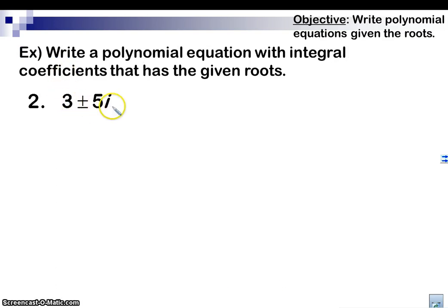So this here, I got 3 plus 5i, 3 minus 5i. Okay, these are my two roots. So I'm going to do x minus 3 plus 5i times x minus 3 minus 5i. Remember, we just always do x minus it.